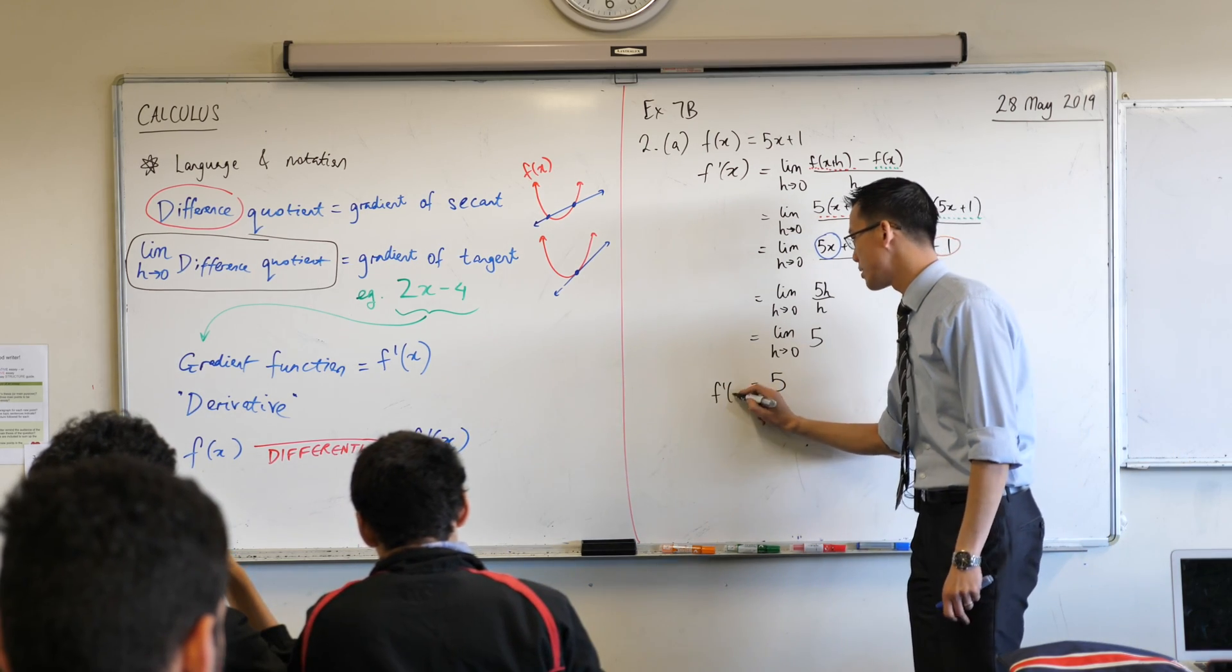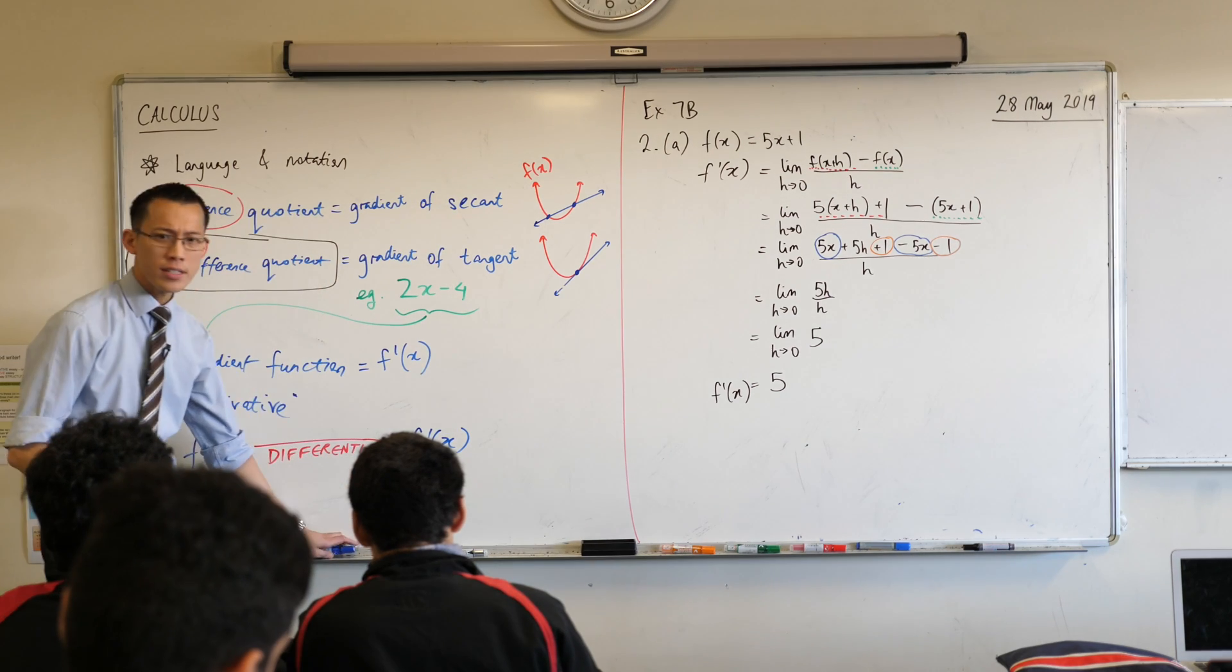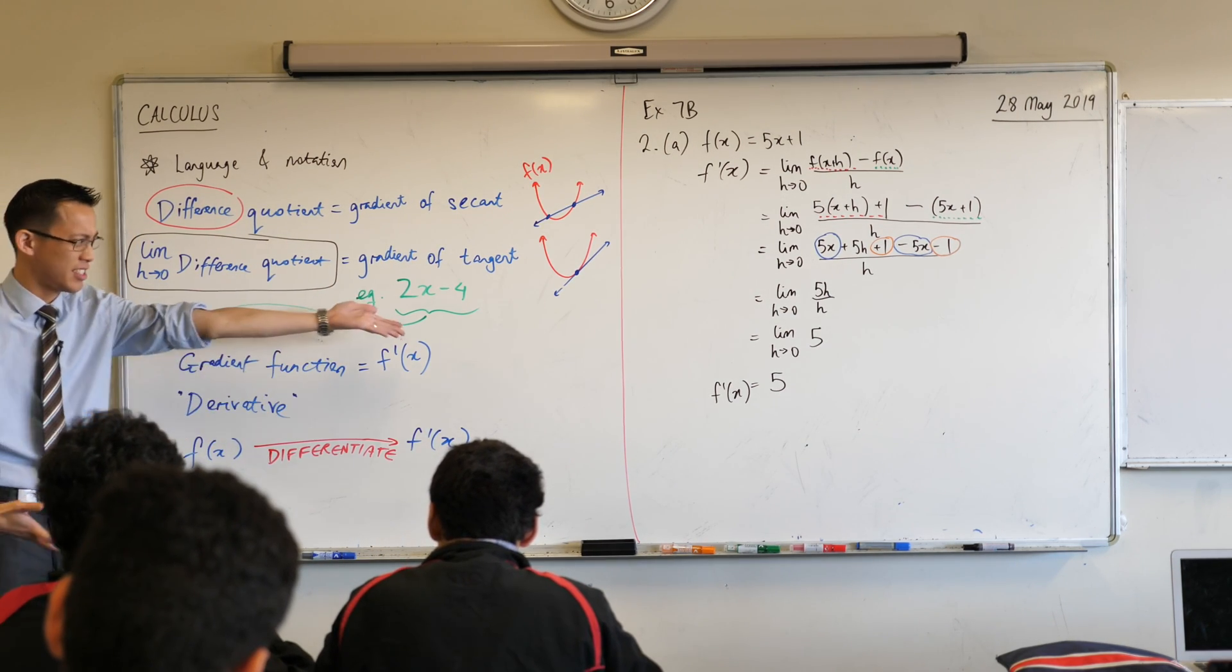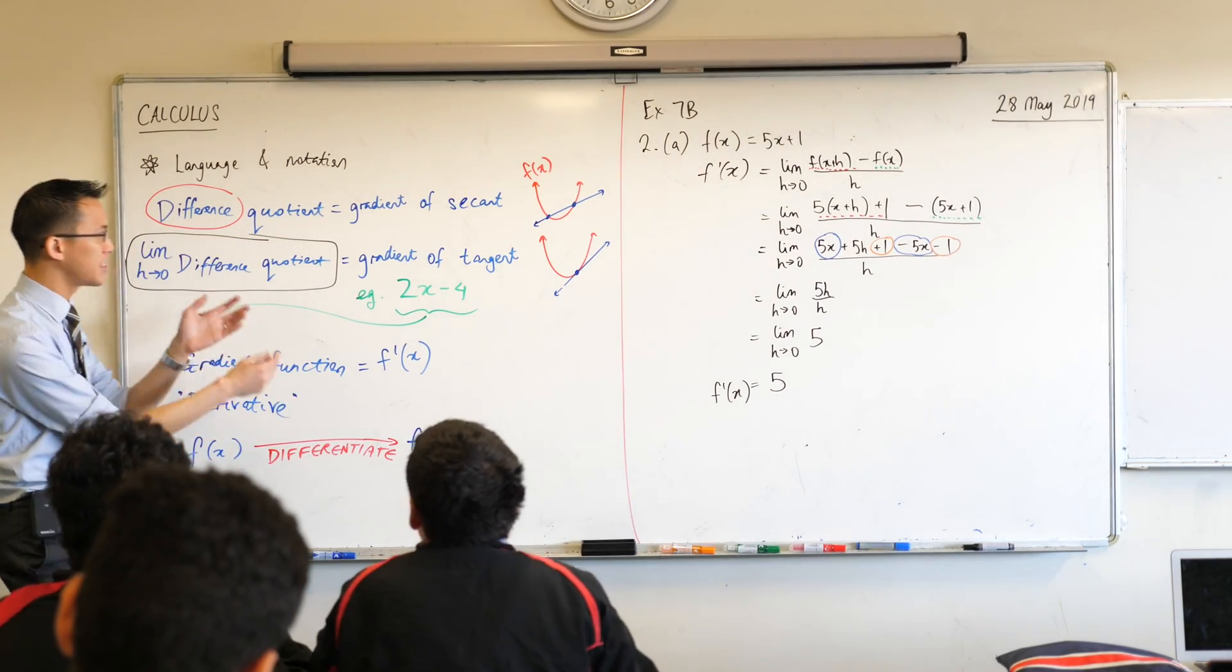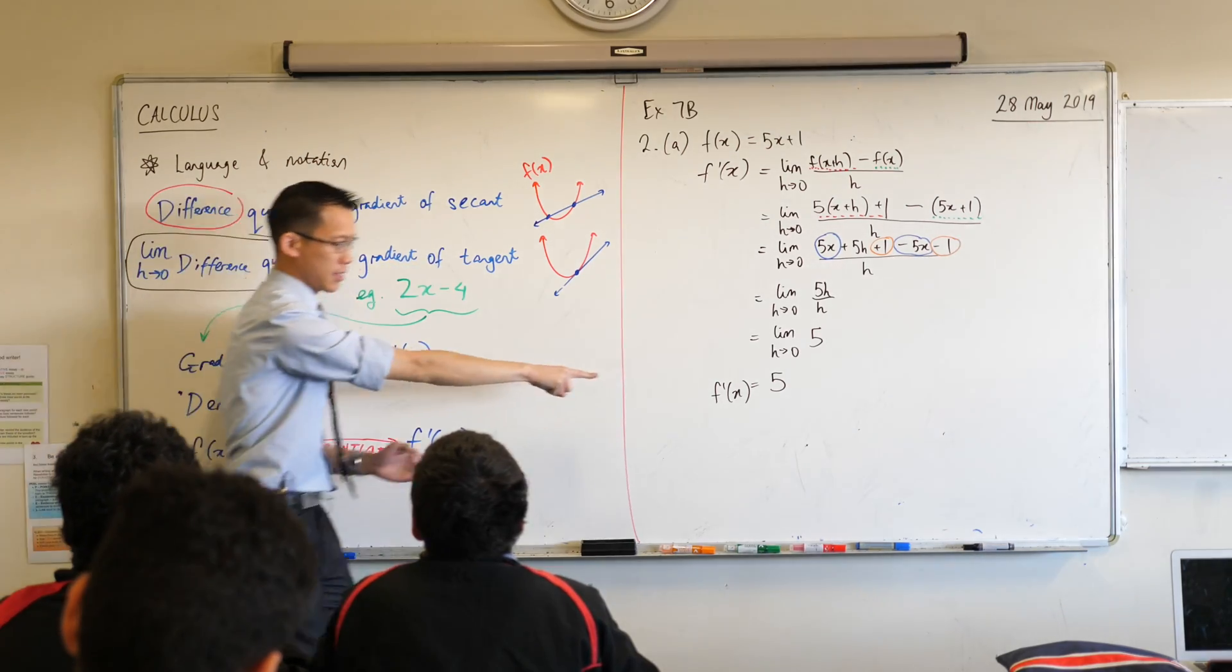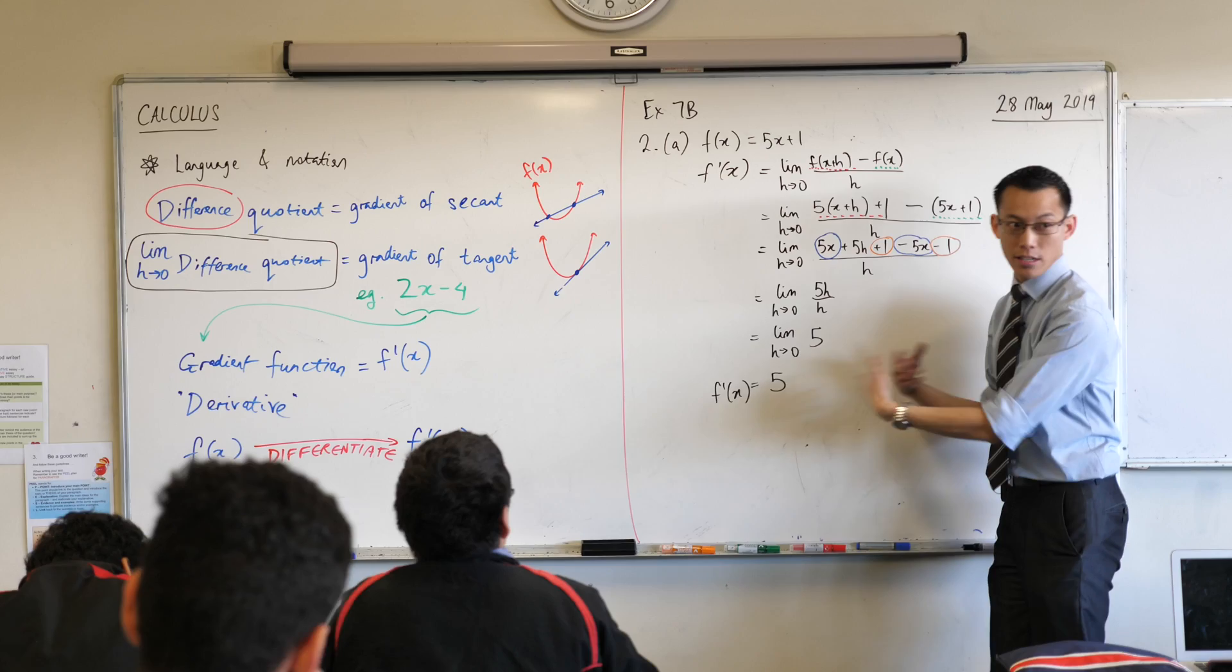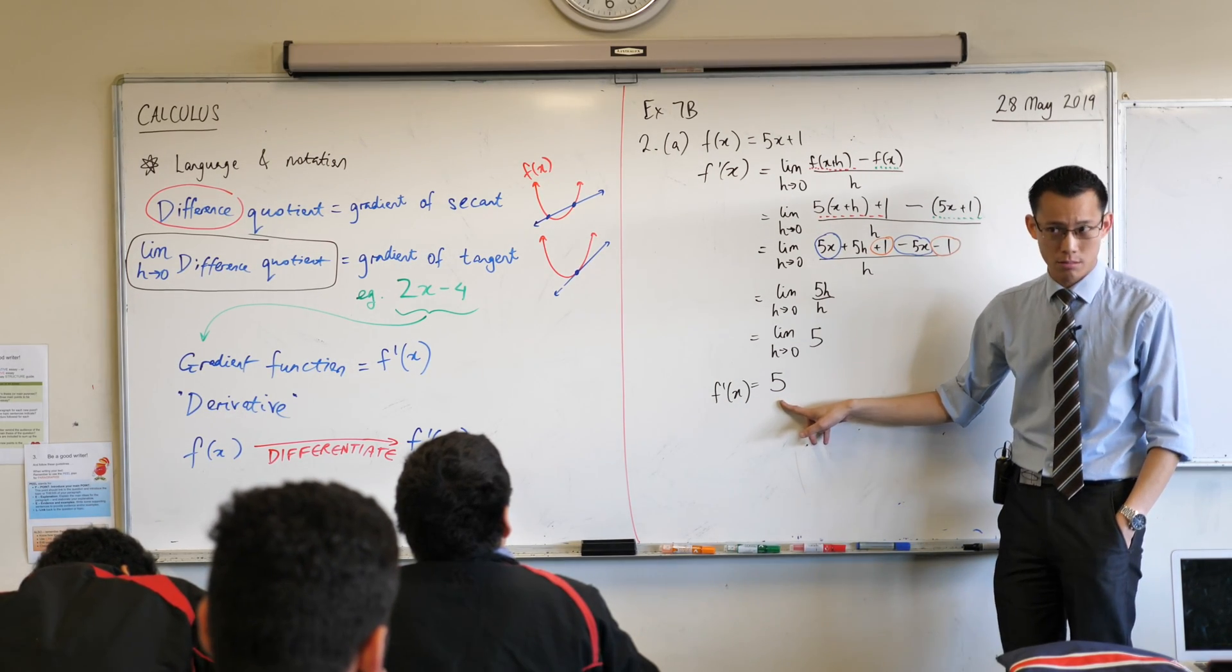Now, let's just pause now that we've got an answer and think about what this means. What is it that we set out to try and calculate? We're differentiating. What does that tell us? The gradient of the tangent. Now, what this is saying is, you notice there's no x there? There's no x. So in other words, whatever value of x I try out, the gradient of the tangent apparently is always 5.